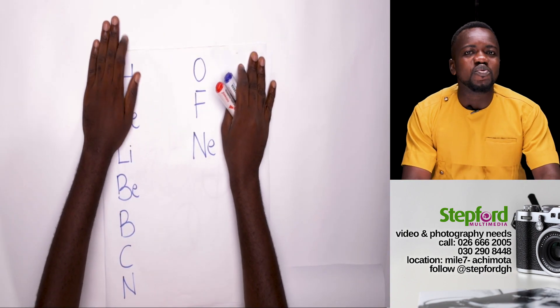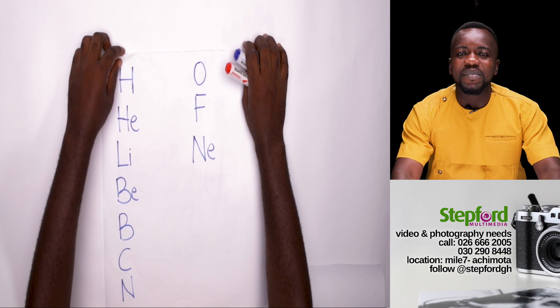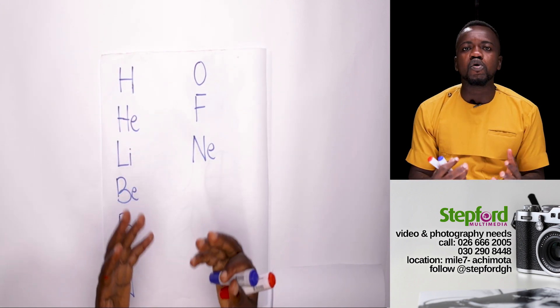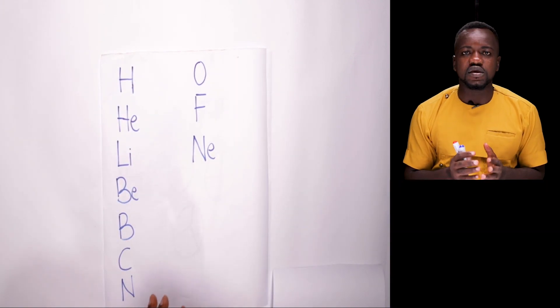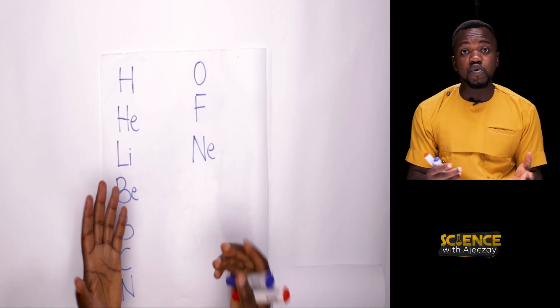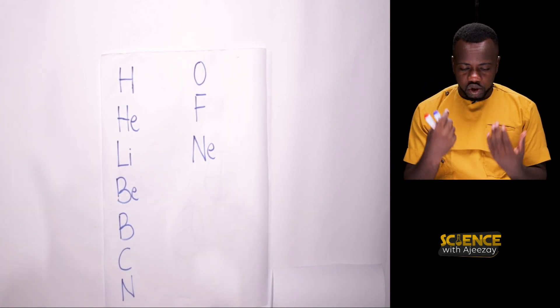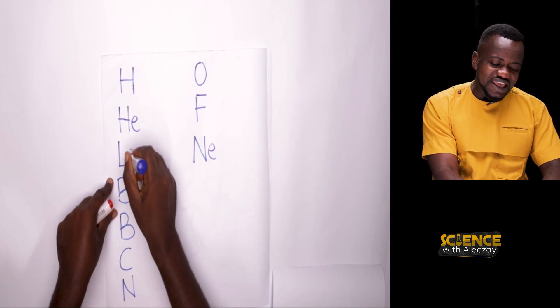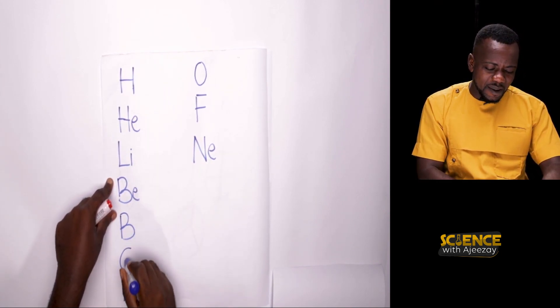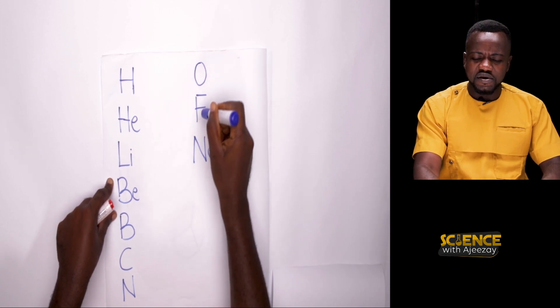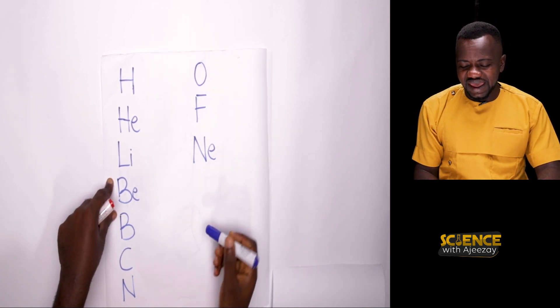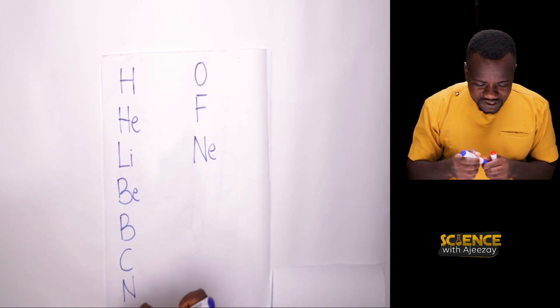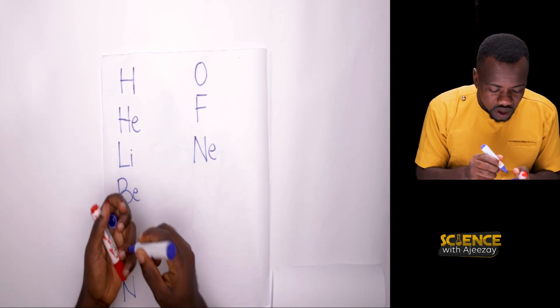This is not the first time you will be hearing the first 20 elements, but I'm here to make it simple with a nice mnemonic short form to help you have it in memory so you can enjoy chemistry. So we have hydrogen, helium, lithium, beryllium, boron, carbon, nitrogen, oxygen, fluorine, and neon.